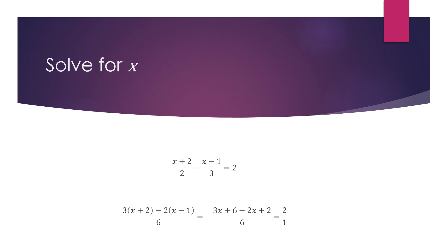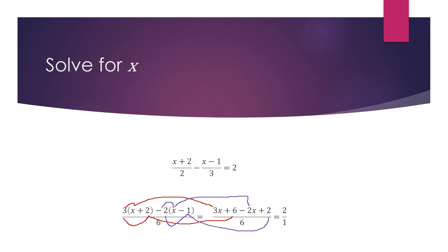The next step is to divide. 2 into 6 gives us 3, and 3 into 6 gives us 2. We bring down the minus sign in the middle and then multiply. 3 times x gives us 3x, and 3 times 2 gives us plus 6. Then minus 2 times x gives us minus 2x, and minus 2 times negative 1 gives us positive 2. The question now reads (3x + 6 − 2x + 2) all over 6.